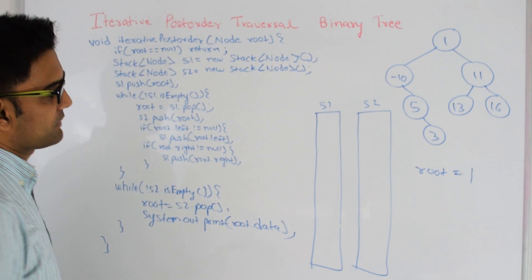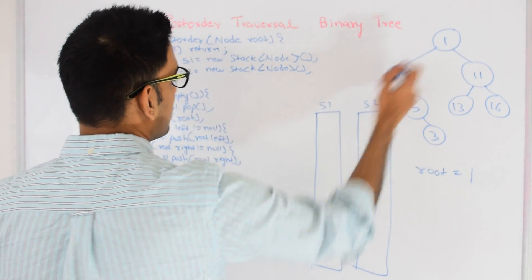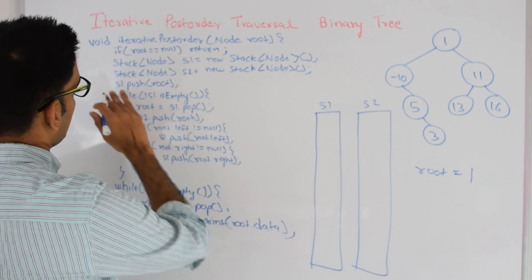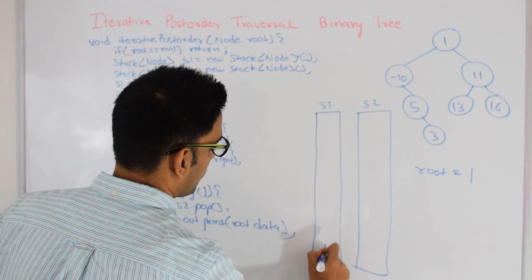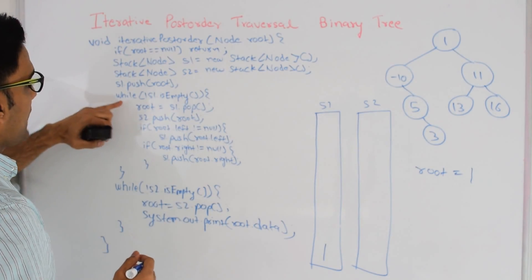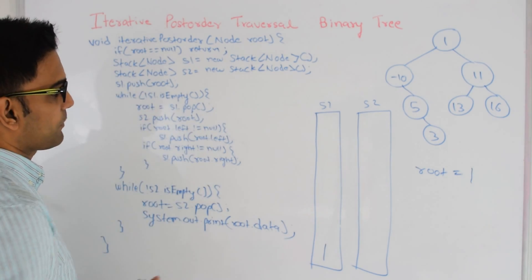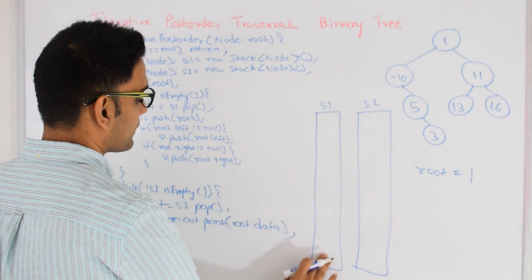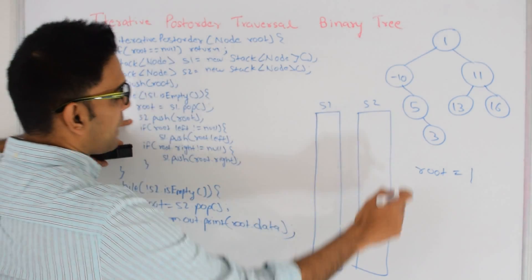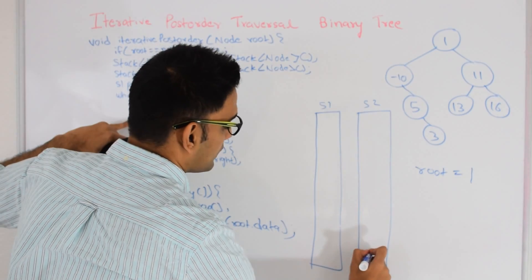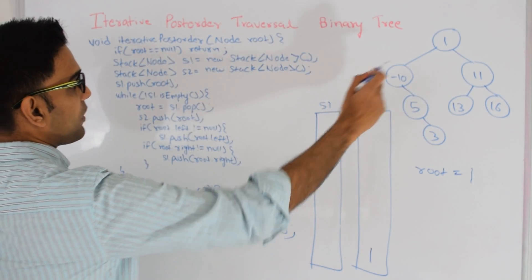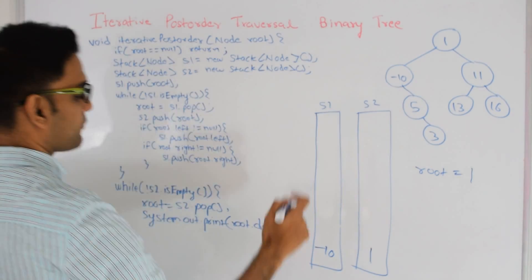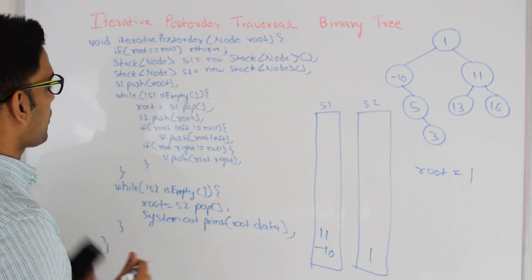Once Stack 1 is empty we keep popping data from Stack 2 and printing them out. Let's trace through the code. My root is 1, root is not null, so I initialize 2 stacks S1 and S2 and push root into S1. While Stack 1 is not empty, root becomes S1.pop — so root becomes 1 and we pop it out. We push root into S2 so S2 gets 1. Root's left is not null so -1 is pushed into Stack 1. Root's right is not null so 11 is pushed into Stack 1. We go back to the top of the while loop — Stack 1 is not empty, so root becomes the top of Stack 1 which is 11.